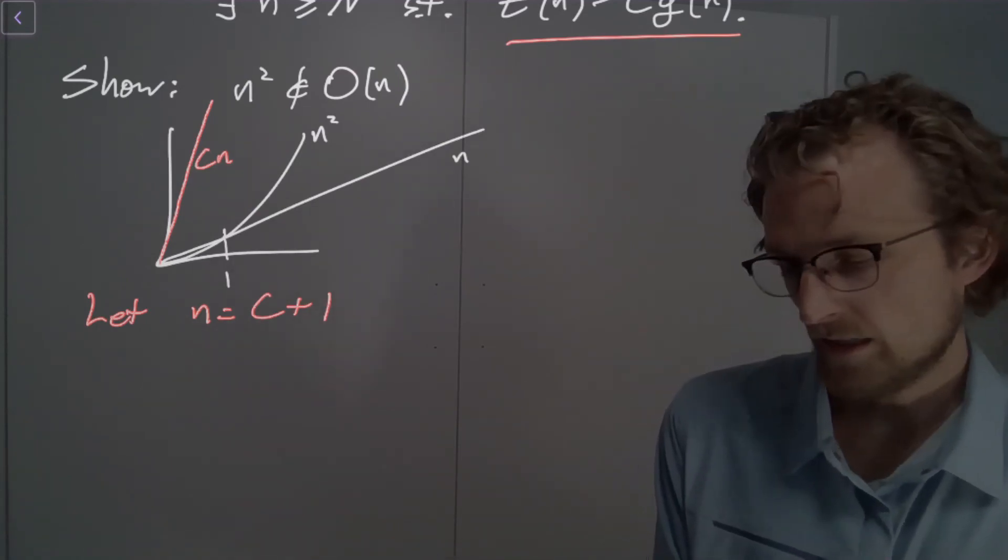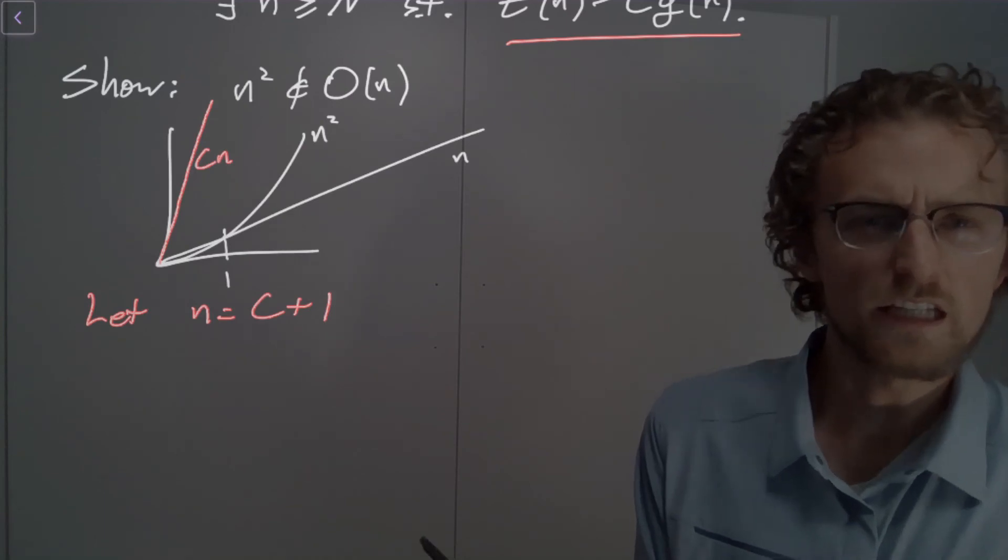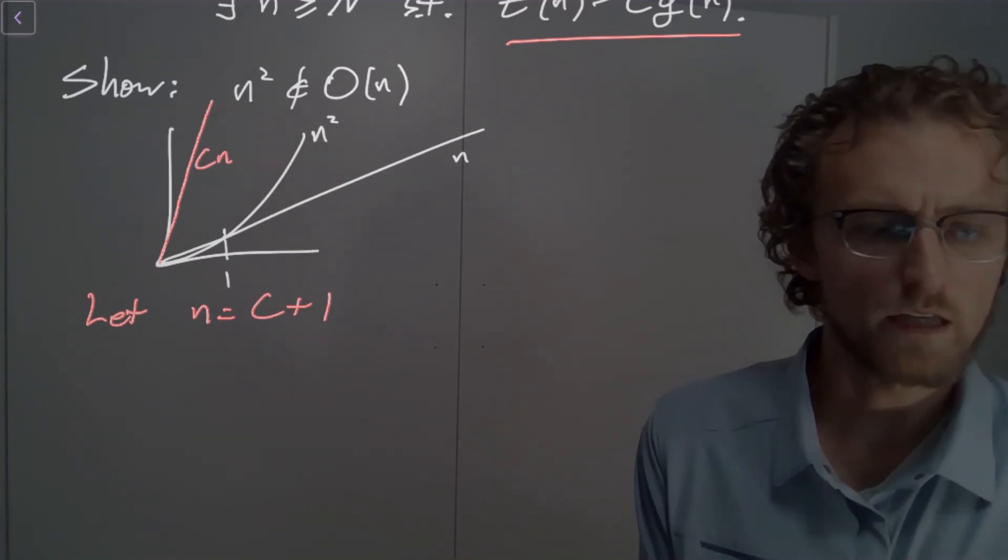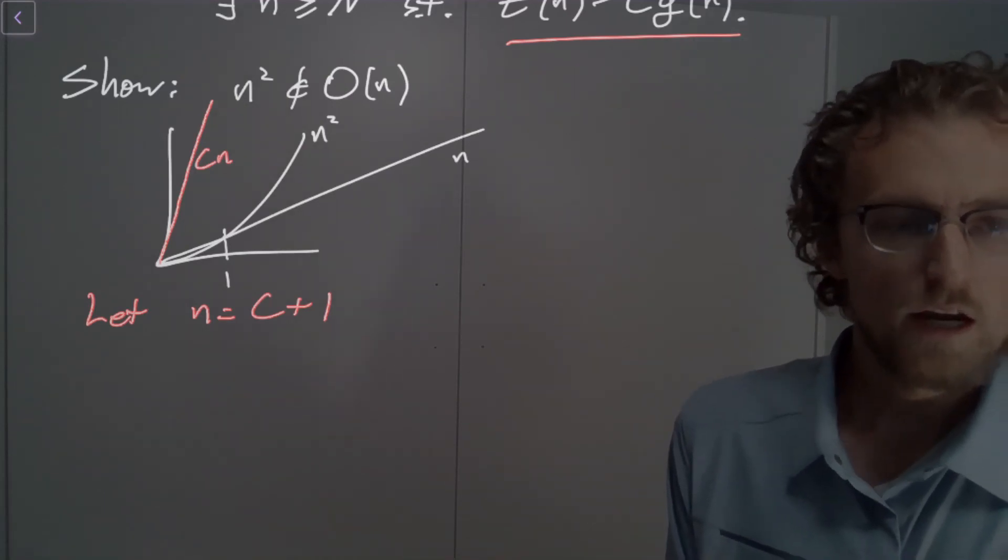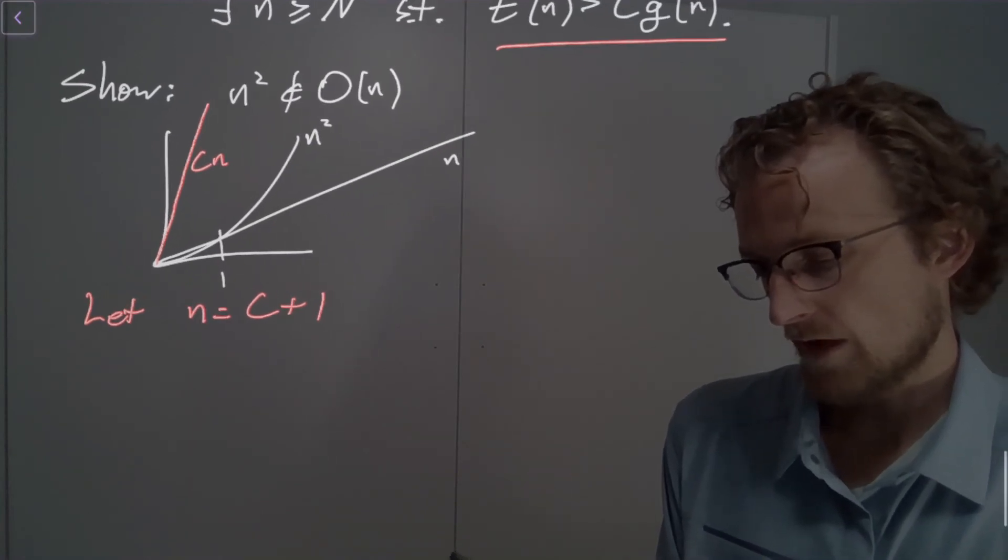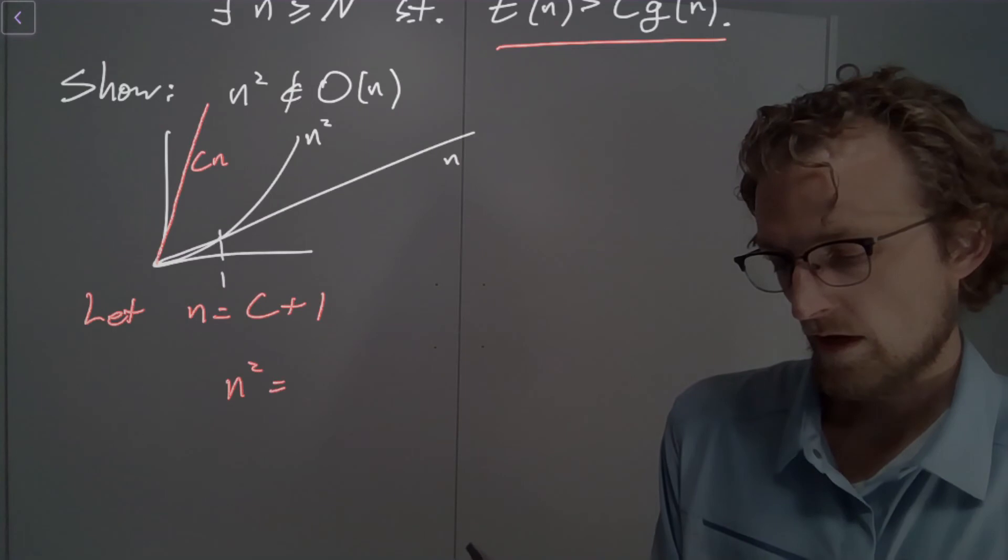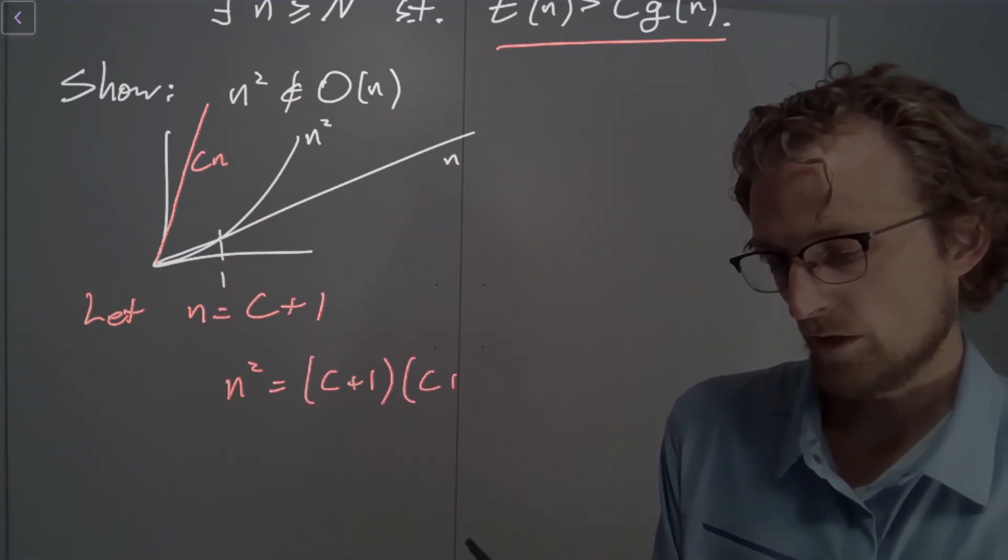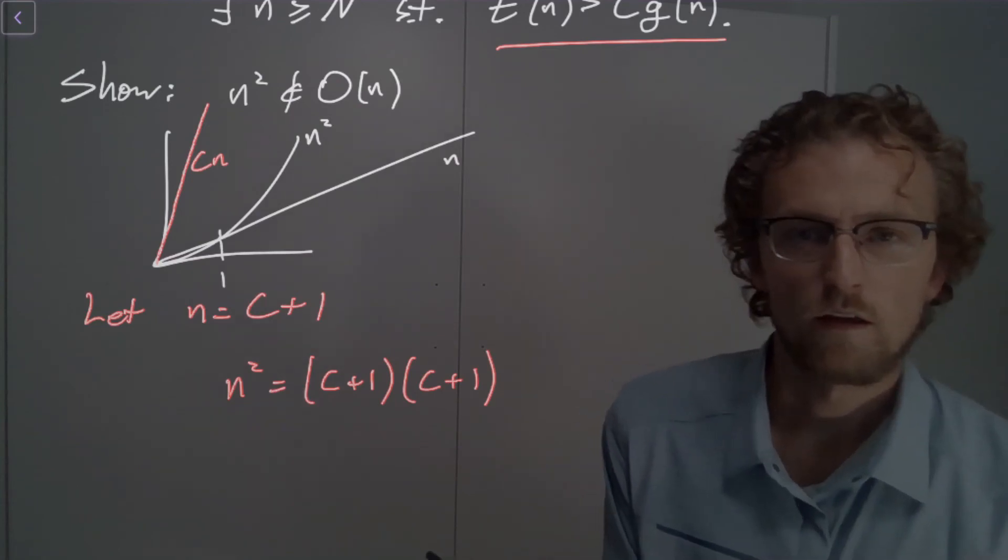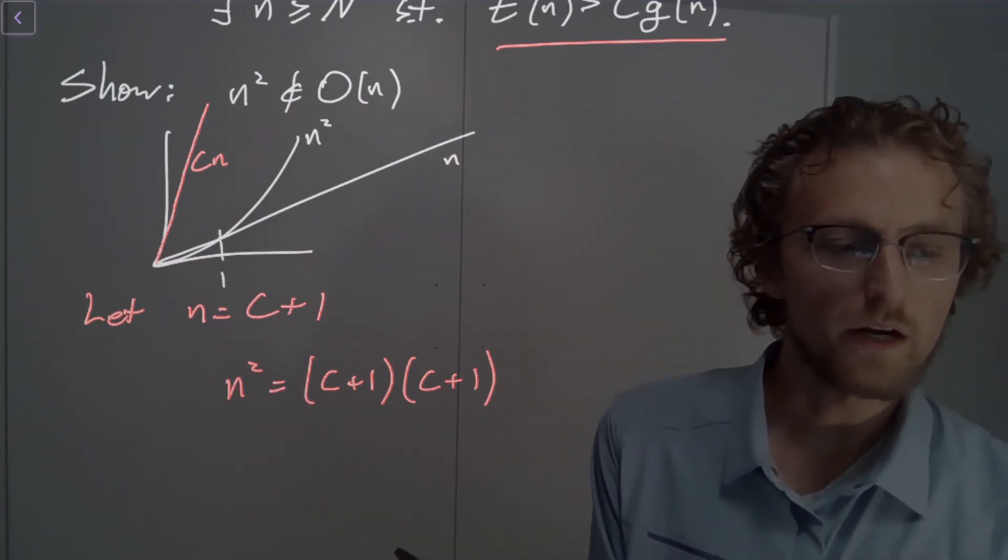And then what do we have? Well, we have that N squared is C plus one times C plus one. And what is this bigger than? Well, this is strictly bigger than C times C plus one.